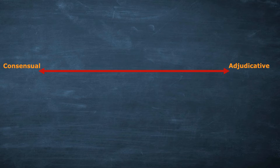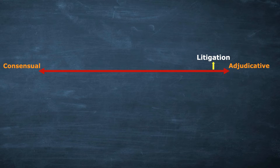See where all four terms fall. The first one is litigation — notice how close litigation is towards the adjudicative side and how far it is from consensual. This means parties have no scope for consensus regarding anything. Once a case is filed in court, it is only the court that decides the issue.